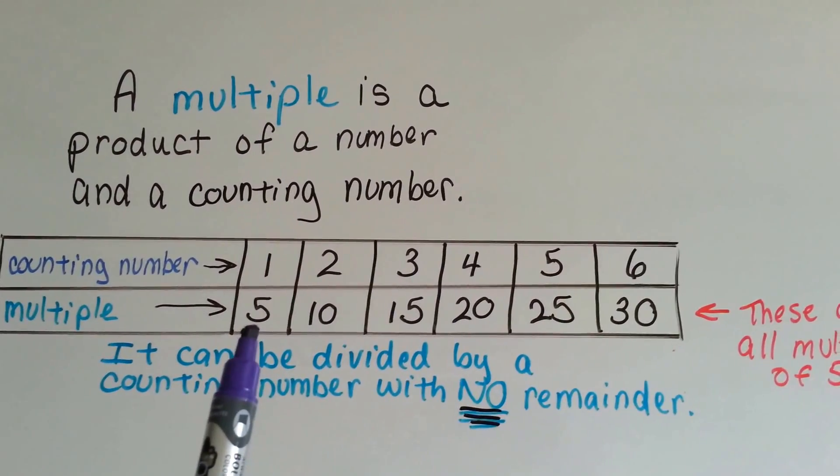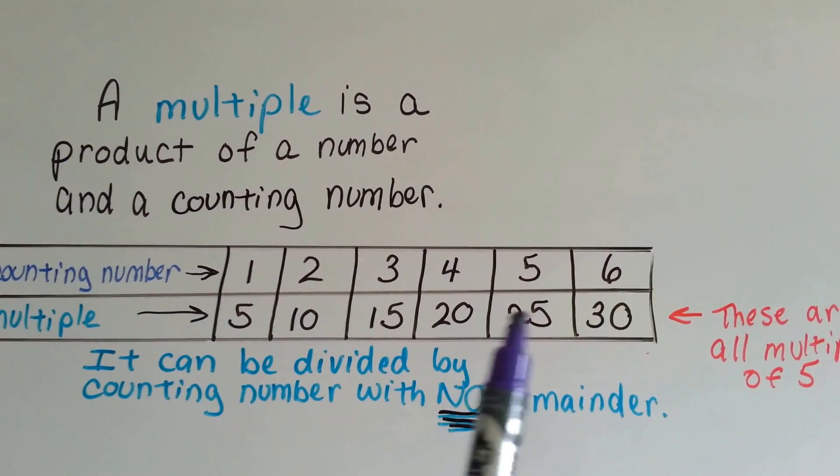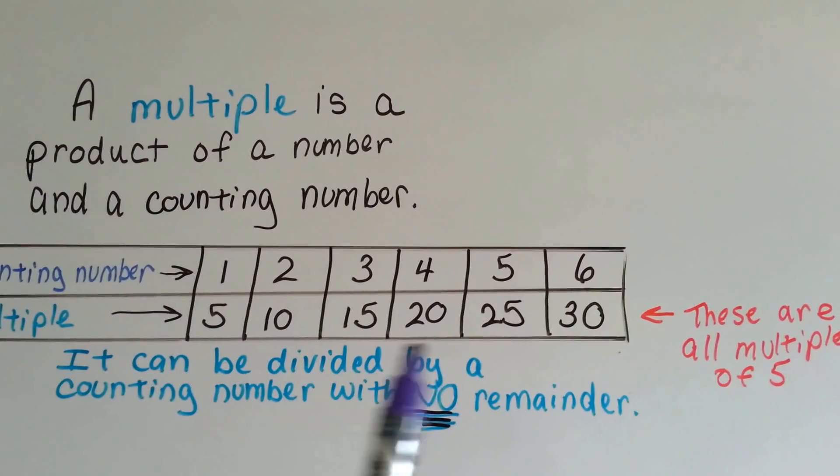the multiples of 5 would be 5, 10, 15, 20, 25, 30. See? They're multiple fives.